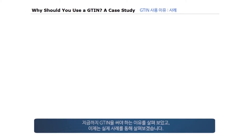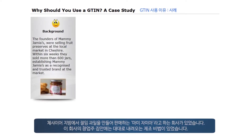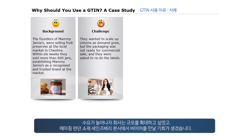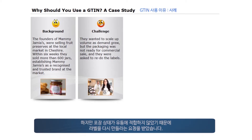We have seen why a GTIN should be used. Let's now see a case study to help us understand its practical applications. The founders of Mami Jamias had a family recipe of fruit preserves, which they were selling at the local market in Cheshire. Within six weeks, they sold more than 600 jars, establishing Mami Jamias as a recognized and trusted brand at the market. They wanted to scale up volume as demand grew, and secured an opportunity to pitch to a buyer at Sainsbury's head office in London. But the packaging was not ready for commercial sale, and they were asked to redo the labels.